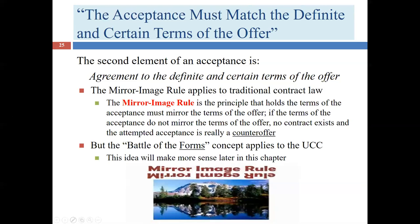The UCC's Battle of the Forms solution says we're caring about substance, not forms. When the acceptance matches on the most important terms, we'll consider it an acceptance. If there are small differences in boilerplate language but the parties seem to have made a deal, we proceed with that deal and sort out later which specific terms apply. The important point: where the mirror image rule would say there is no contract, the Battle of the Forms rules say yes, there is a contract.